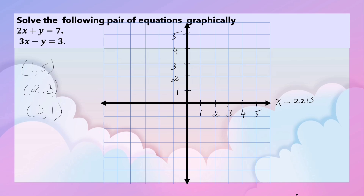Now let us take the graph sheet and plot these ordered pairs of points. This is the x-axis and this is the y-axis. The point 1 comma 5 — let this point be A. The point 2 comma 3 — let this point be B.